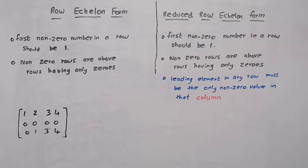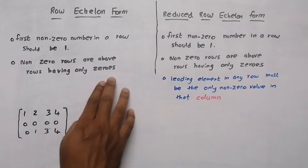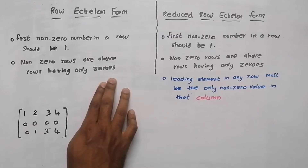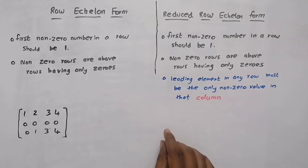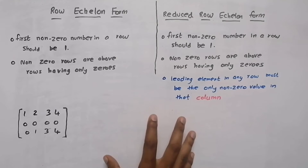In this video, we are going to convert a matrix into row echelon form and reduced row echelon form. We are going to study the difference.